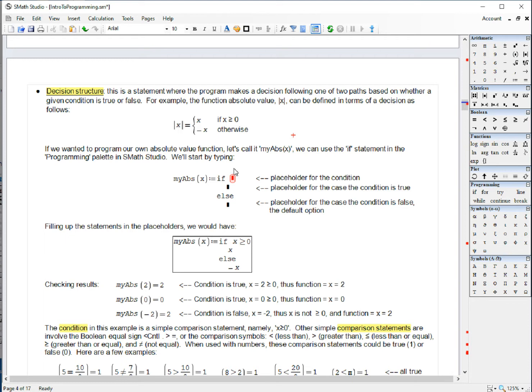We can do that in SMAS Studio by creating a function that we call myabs, parentheses, x, spacebar, colon, and then we're going to insert an if statement that's available right here in the programming palette.